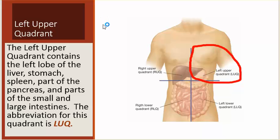The left upper quadrant contains the left lobe of the liver, stomach, spleen, parts of the pancreas, and parts of the small and large intestines. The abbreviation for this quadrant is LUQ.